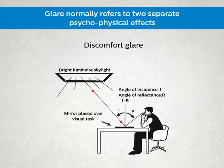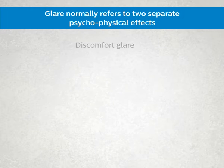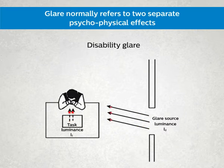Discomfort glare causes discomfort without necessarily impairing the vision of objects and details, and disability glare impairs the vision of objects without necessarily causing discomfort.